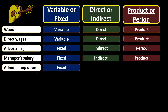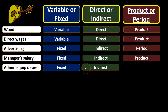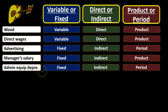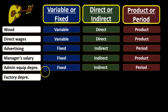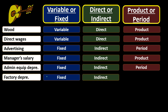For admin equipment depreciation — like fax machines or coffee machines in the administrative office, not the factory — we say it's fixed because we know exactly what it will be. It's indirect or not applicable because it's not in the production area. And it's a period cost because it's in the administrative office, not part of production. For factory depreciation, it's still fixed and still indirect, but this time it is in the factory, so it should go into the production of our guitars.